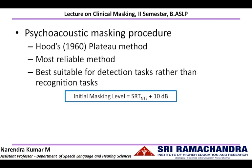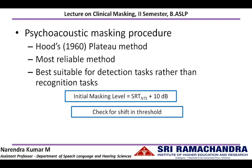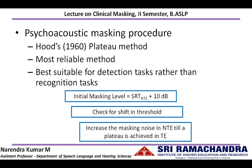The presentation level of noise is going to be the SRT of the non-test ear plus 10 dB. This amount of noise is introduced into the non-test ear and the threshold in the test ear is re-established. We need to check for shifting of the threshold in the test ear. The noise in the non-test ear has to be increased in a step-by-step manner until a plateau is achieved in the test ear. Once a plateau is achieved, the true threshold in the test ear is established.